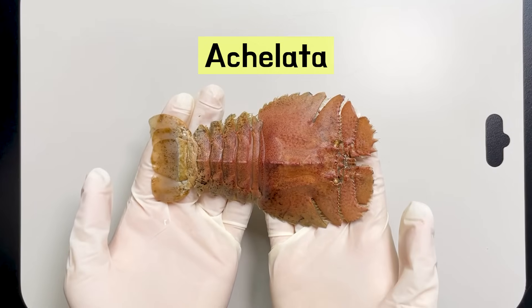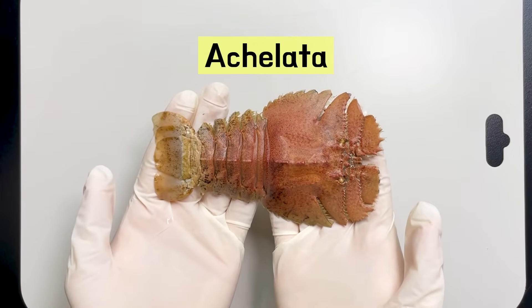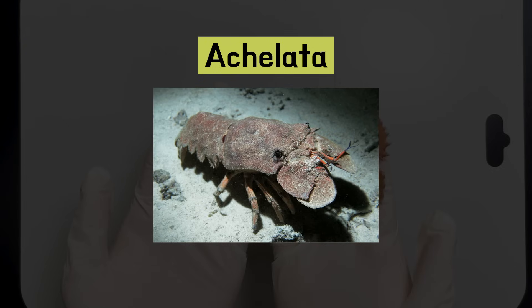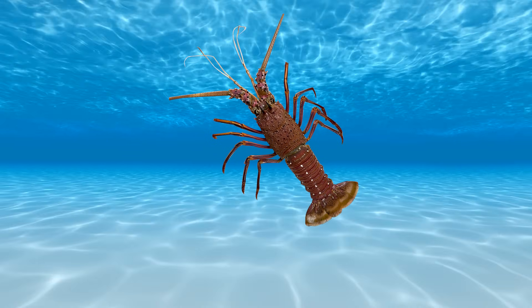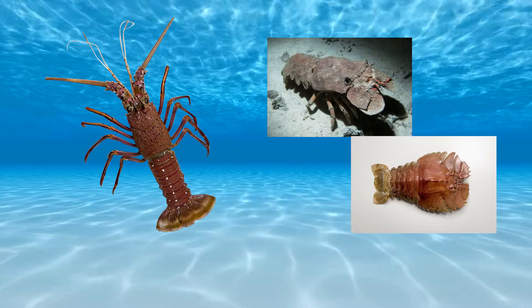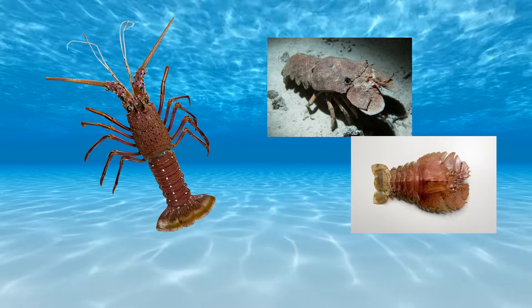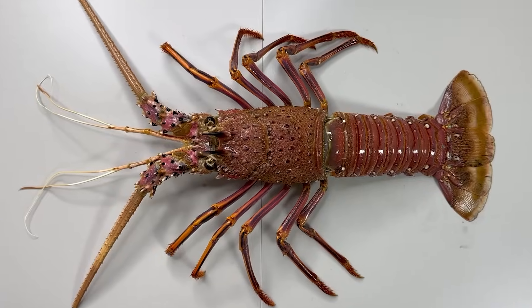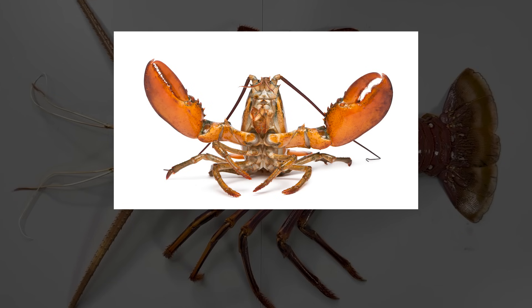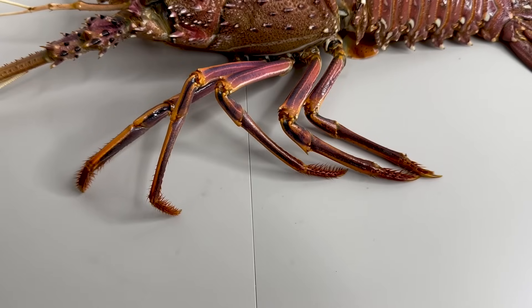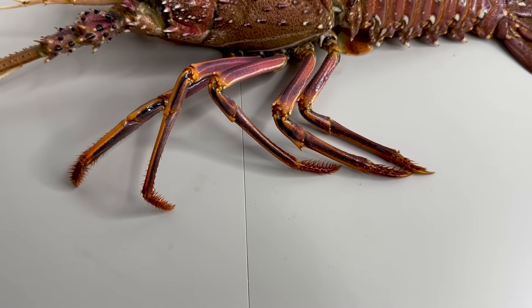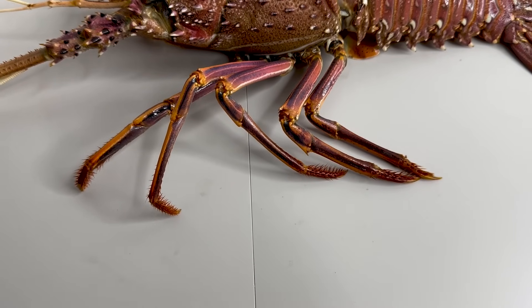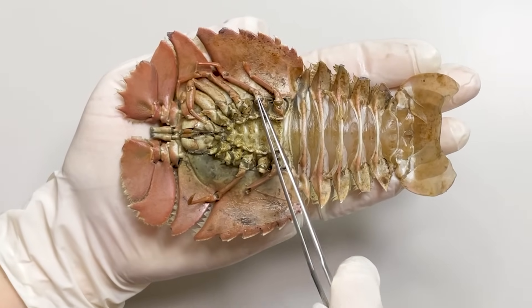Achelata includes species like the fan lobster and the slipper lobster, which resembles a cicada larva. Thus, the spiny lobster shares more similarities with these creatures than with true lobsters. A key difference from lobsters is the absence of claws — the spiny lobster's legs are all pointed, similar to those of the fan shrimp.